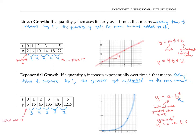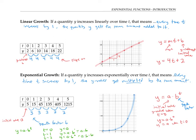The number b is called the growth factor. The growth factor is the number that y gets multiplied by every time you increase t by one. That makes sense from the equation y equals a times b to the t: when t equals zero, y equals a; when t is one, y equals a times b; when t equals two, y equals a times b squared, which is a times b times b. Each time you increase t by one, you're multiplying by another factor of b. For this particular function, the growth factor b is three, so our equation is y equals five times three to the t.